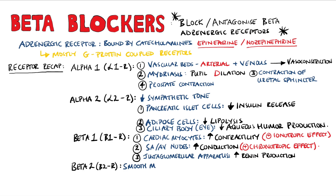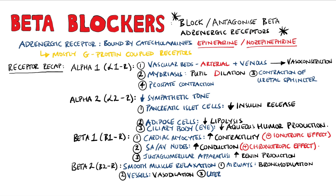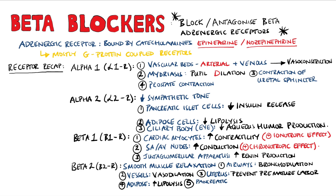Beta-2 receptors ultimately lead to smooth muscle relaxation. Therefore, we have bronchodilation and vasodilation, because these receptors are present in the airways and in the vessels. Interestingly, they are also present in the uterus, and by causing smooth muscle relaxation they prevent premature labour. Beta-2 receptors are also present in adipose cells, pancreatic islet cells, and the ciliary body, but compared to alpha-2 receptors the effects are basically the opposite — we have an increase in lipolysis, an increase in insulin release, and an increase in aqueous humour production.